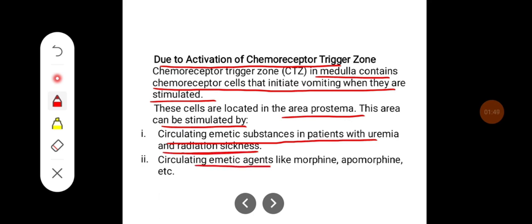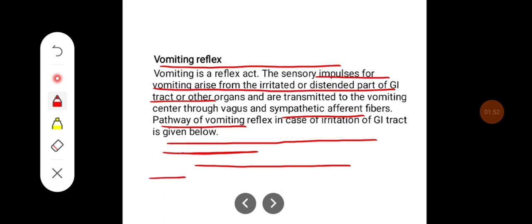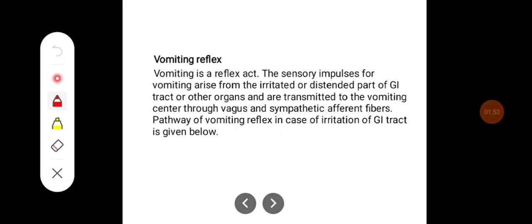Circulating emetic substances include morphine, apomorphine, etc. Vomiting is a reflex act. The sensory impulses arising from the irritated or distended part of the GI tract or other organs are transmitted to the vomiting center through vagus and sympathetic afferent fibers.